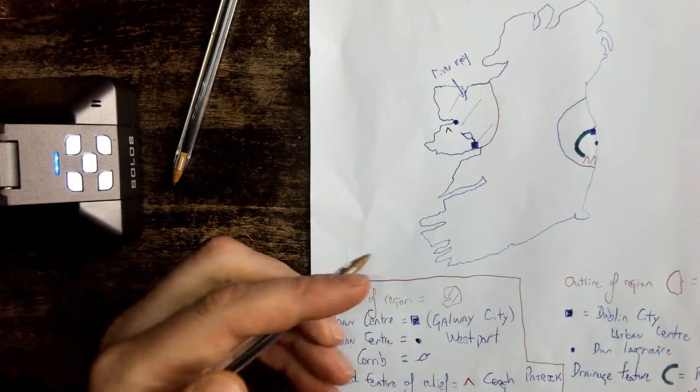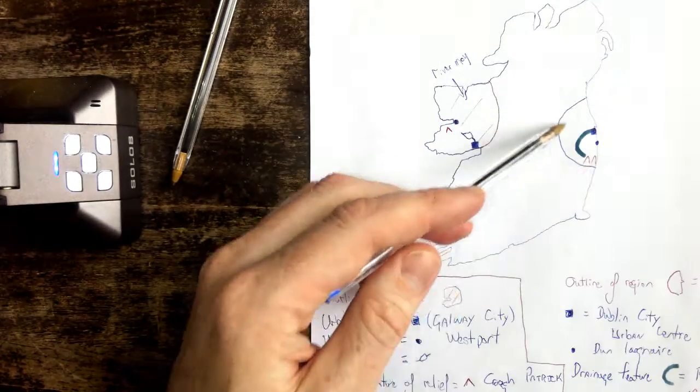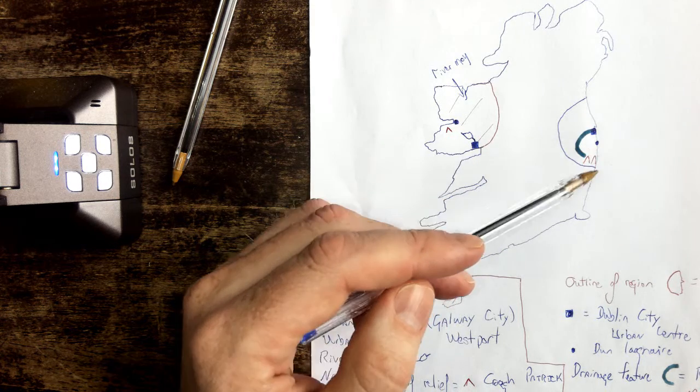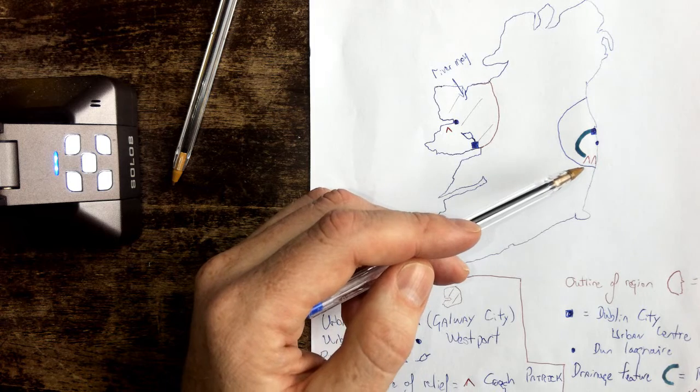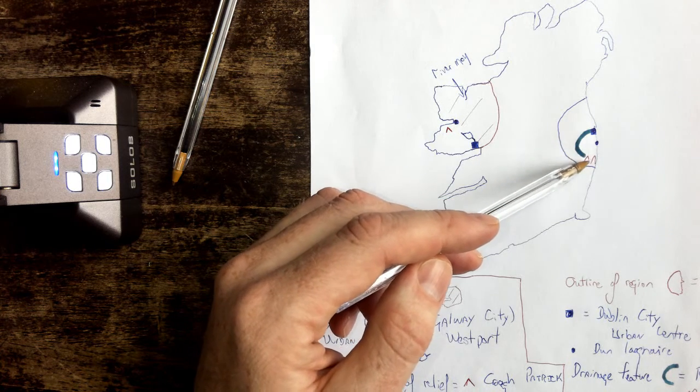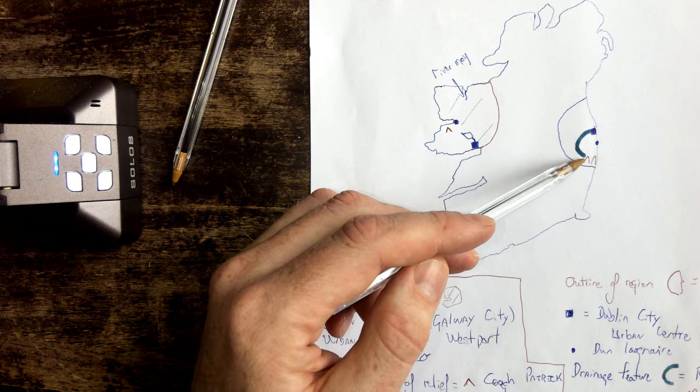So there you have it. You have the outline of the region which is the greater Dublin area. You have your two urban centres, Dublin city and Dunleary. You have your drainage feature which is the river Liffey, and you have your mountain range which is the Dublin mountains.